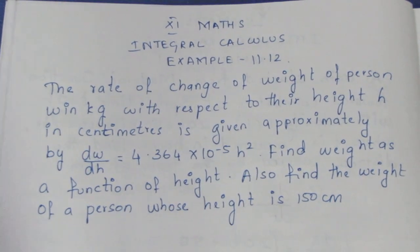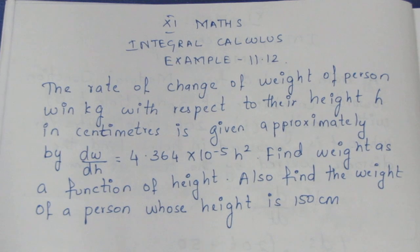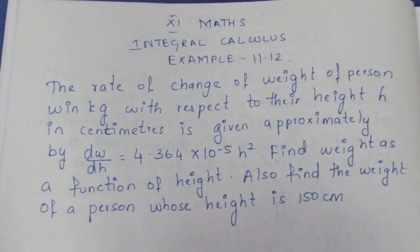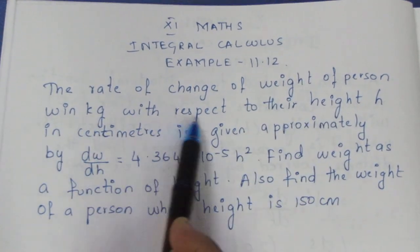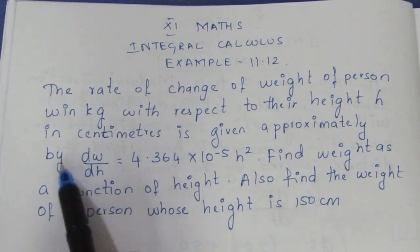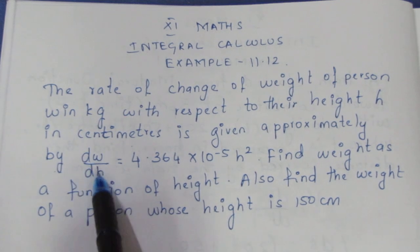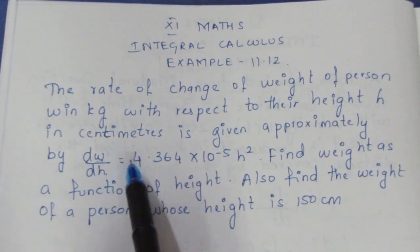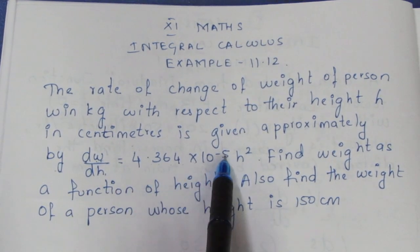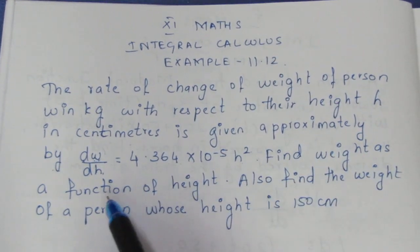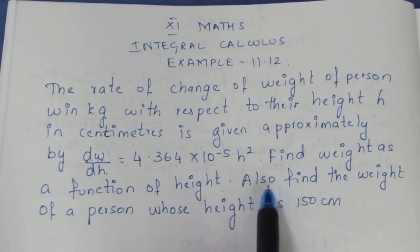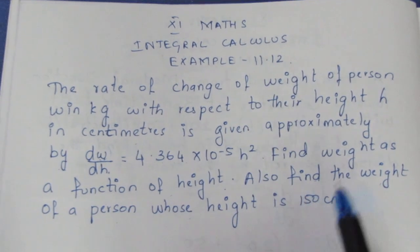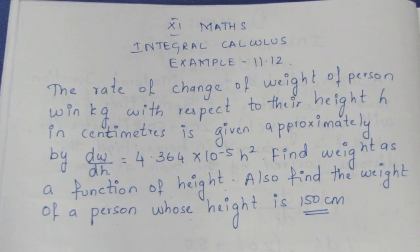Hello viewers, I am Aitli. In 11th Maths Integral Calculus, Example 11.12, we are going to solve a question. The rate of change of weight of a person W in kg with respect to height in centimeters is given approximately as dW/dH = 4.364 × 10⁻⁵ H². Find the weight as a function of height. Also find the weight of a person whose height is 150 centimeters.